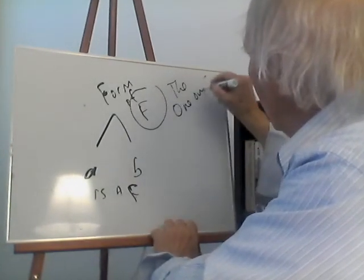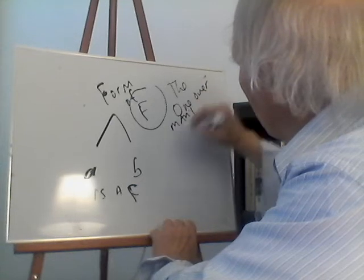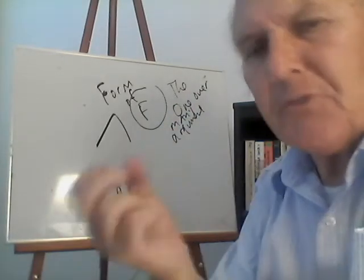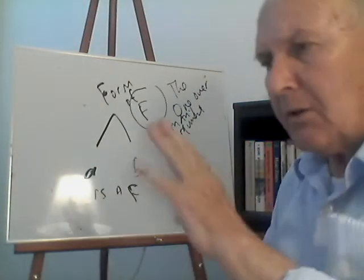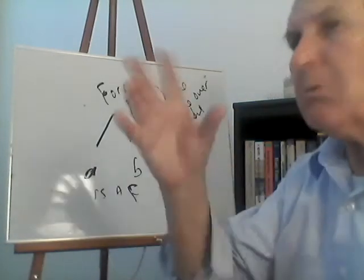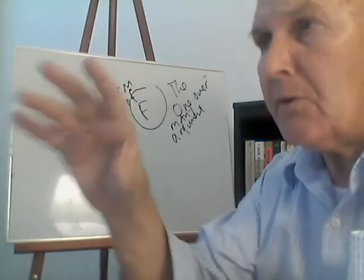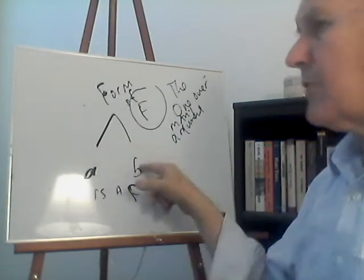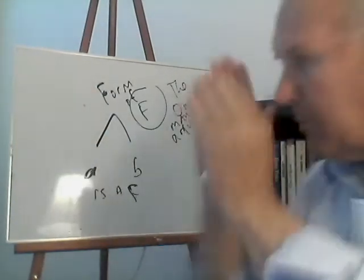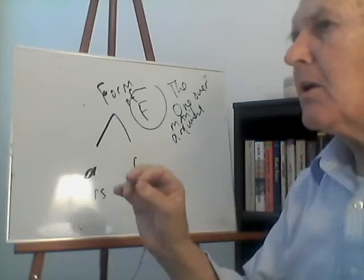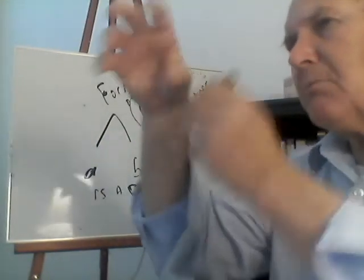This is called the one over many argument, and it's one way of making sense of what we mean by universal terms. In the Middle Ages, from around 1100 to 1300 or 1400, philosophers debated the problem of universals and whether they're real or not. Universal terms are terms that can be applied to more than one thing. Names are not universal — names are particular. Names just pick out one thing: Socrates, Plato, California, New York — they pick out one thing. Universal terms are going to be applied to many things.